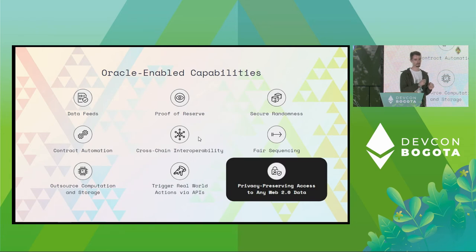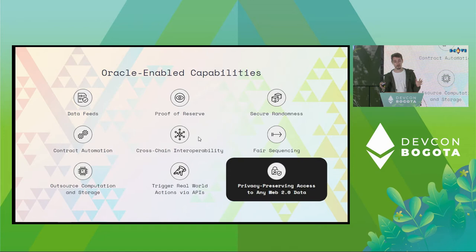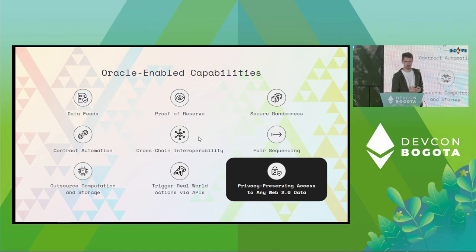The second Oracle-enabled capability for the future that we're working on is providing privacy-preserving access to Web 2.0 data — almost any Web 2.0 data — to smart contracts. This is a super cool capability.